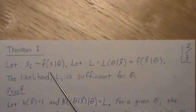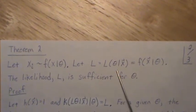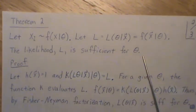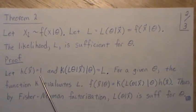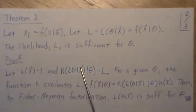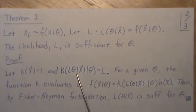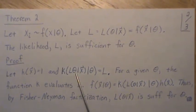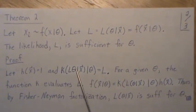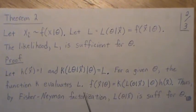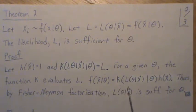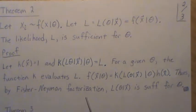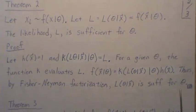Theorem 2: let Xi be distributed with F, and let L be the likelihood, which is the joint density or distribution. The likelihood L is sufficient for theta. Quick proof: let H equal one and let K be this function — K evaluates L for a given theta. Partitioning the joint distribution this way, H is one and K equals L, so by the Fisher-Neyman factorization, the likelihood is sufficient for theta.